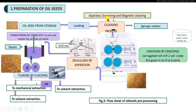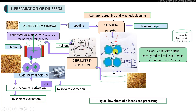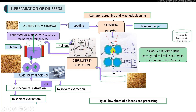Oil seeds contain a number of impurities including lighter particles, heavy particles, and metal particles. These are separated by the screening process, aspiration process, and magnetic cleaning process. After cleaning, the oil seeds are cracked — that is, a coarse milling process — using a roller mill in a vertical position with rough-surface rotating rollers that break the seeds into small pieces.